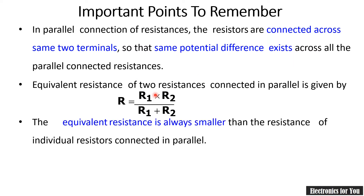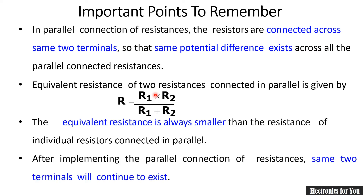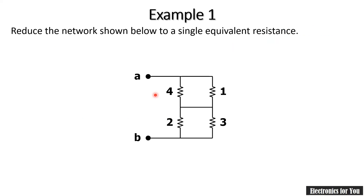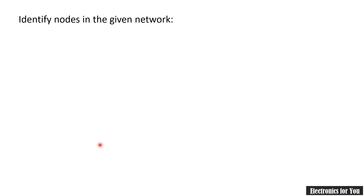Important points for parallel connection: the potential difference across all resistances is the same; the equivalent resistance is always smaller than any individual resistance connected in parallel; and after implementing the parallel combination, the two nodes remain as they are. A node is the point where two or more resistances or elements are connected. Now let us solve Example 1: reduce the network shown in the figure into a single equivalent resistance.